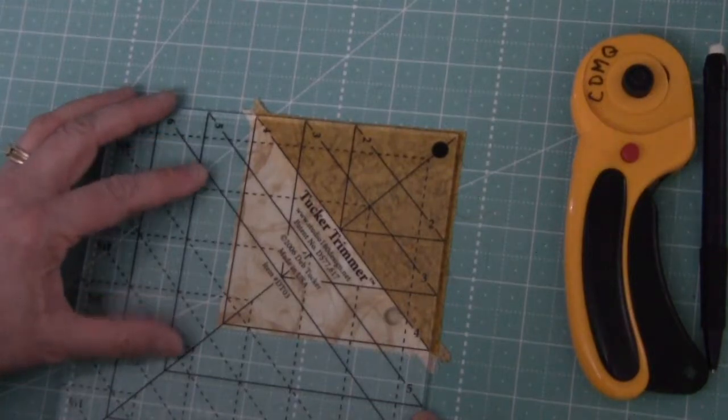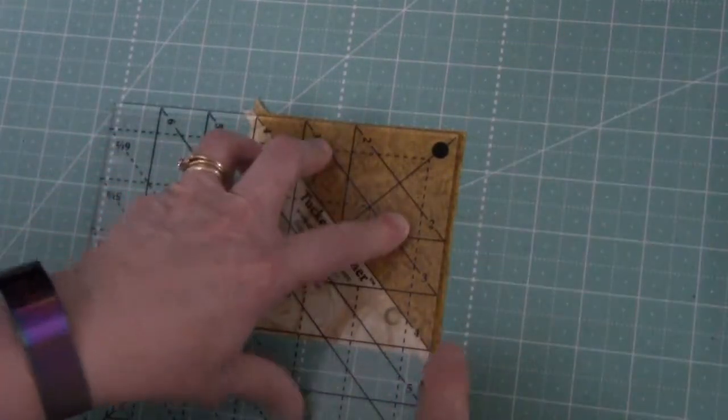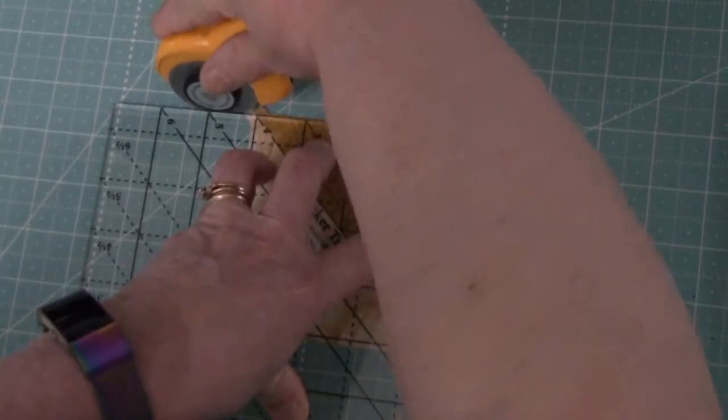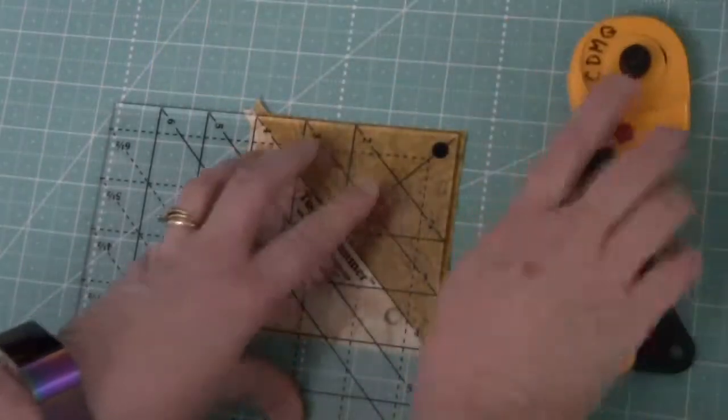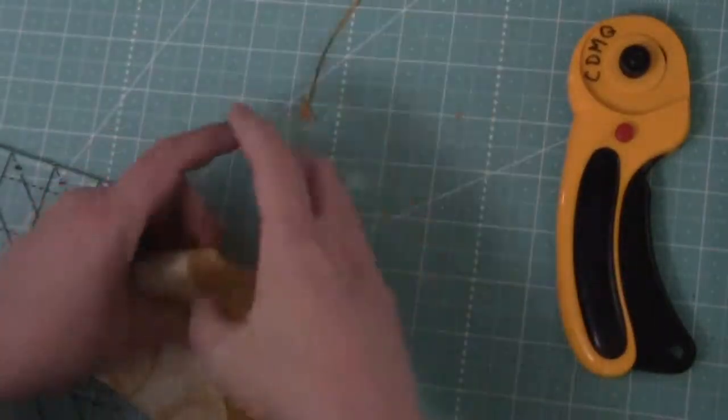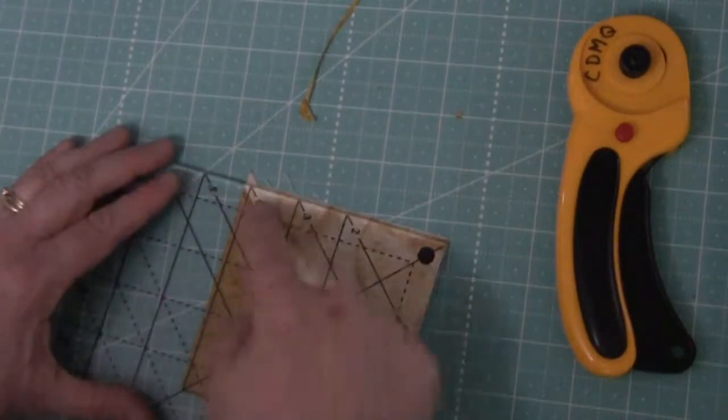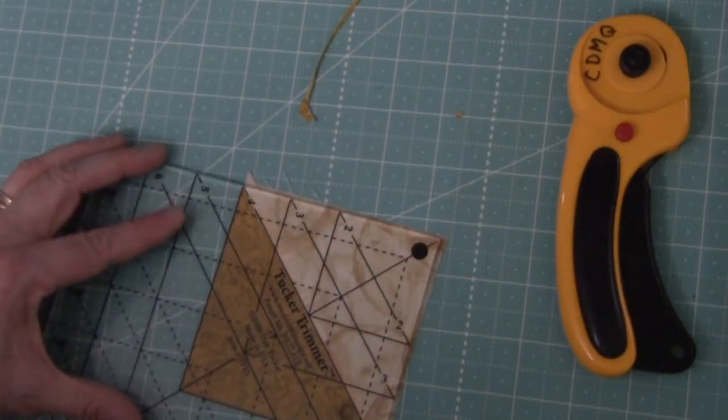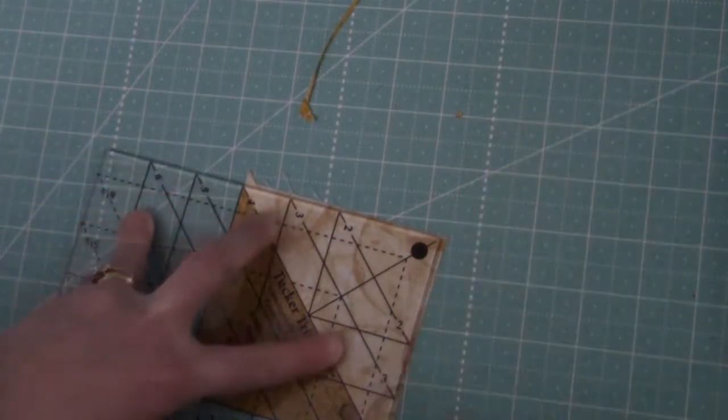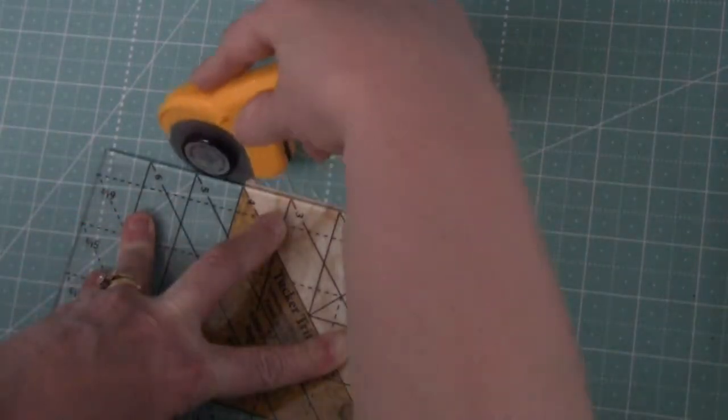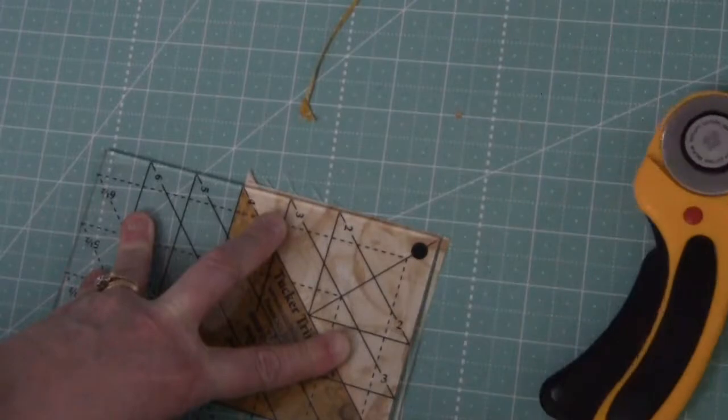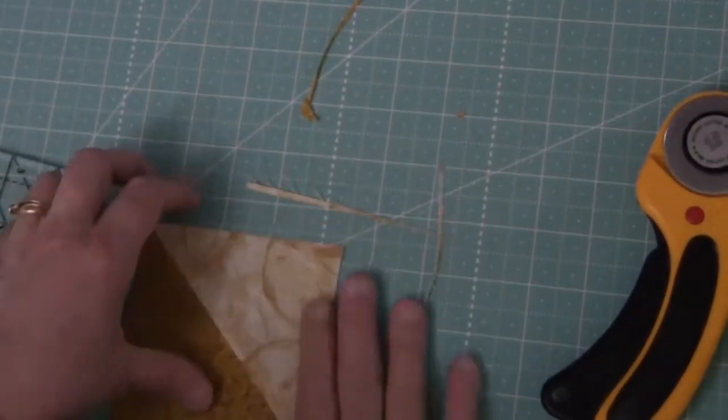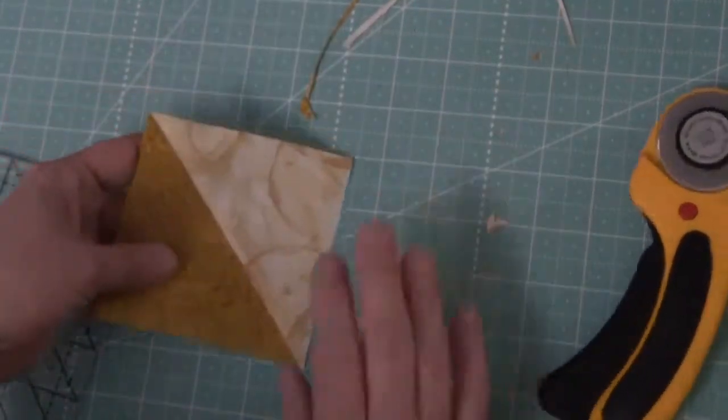There's two ways to trim it up and I've demonstrated these before. We want 4 inch units, so if we trim with our Tucker trimmer we're going to put the sizing diagonal along the seam, and then we can very easily trim two sides at a time to get us the proper size unit.